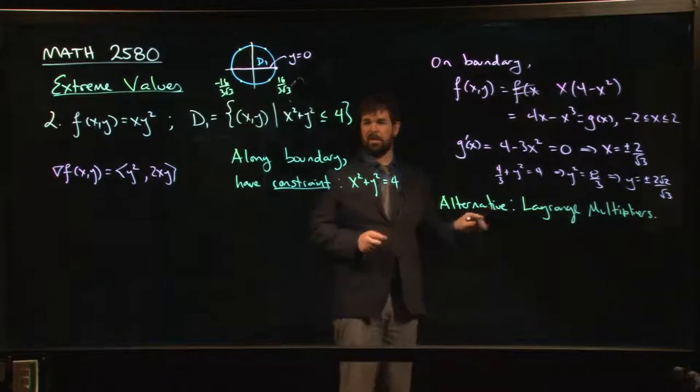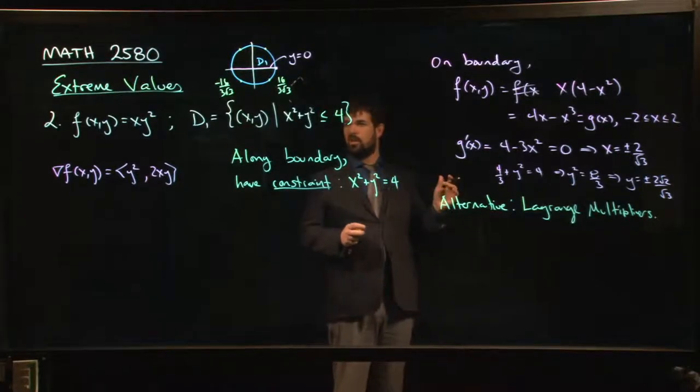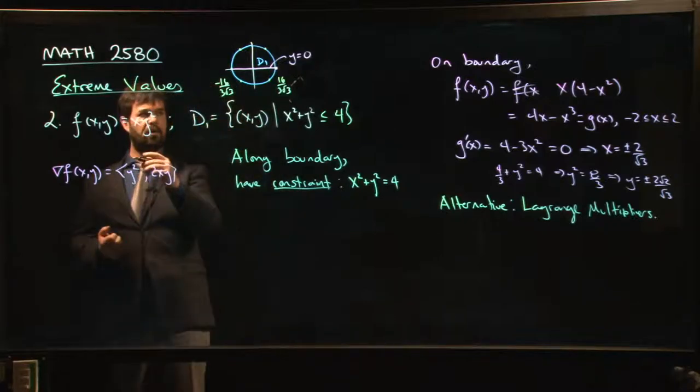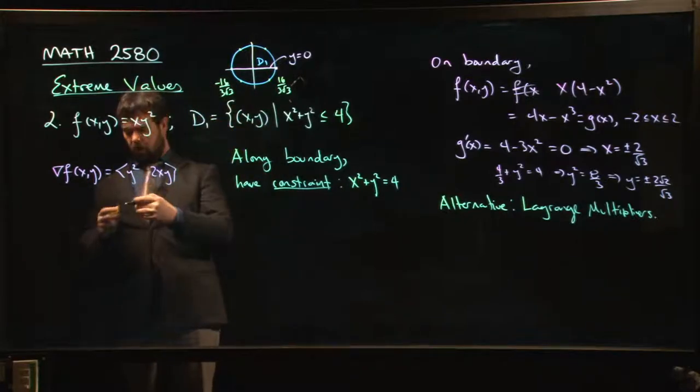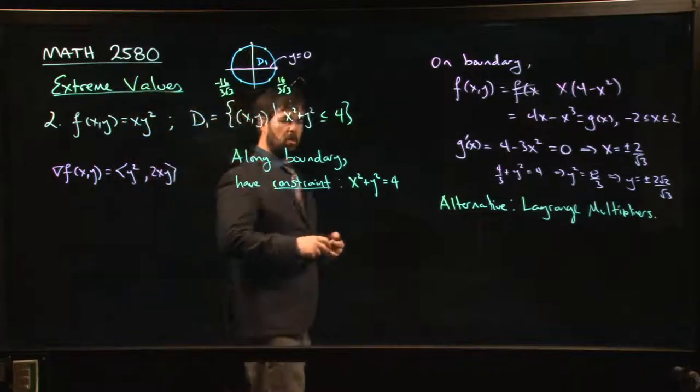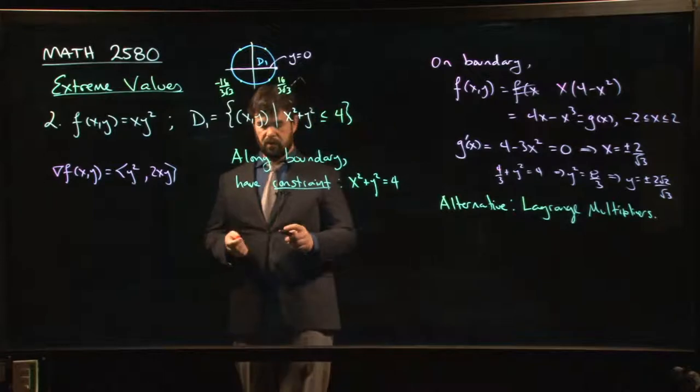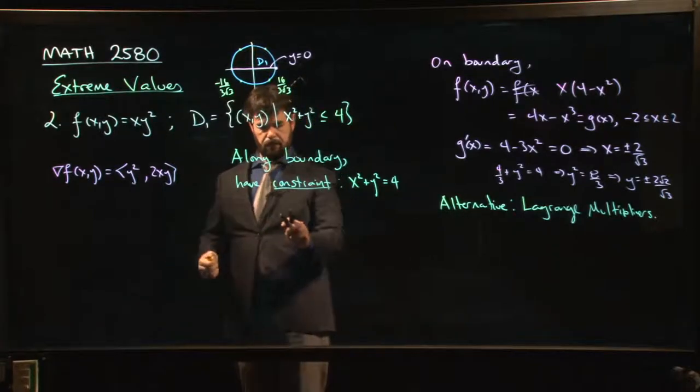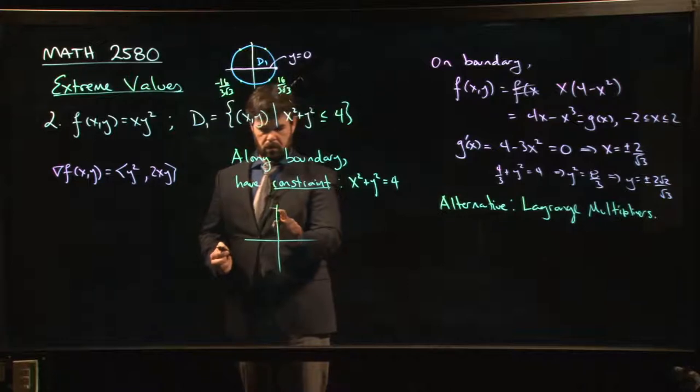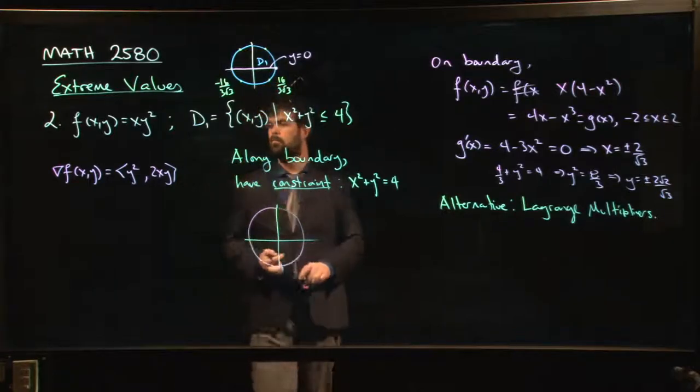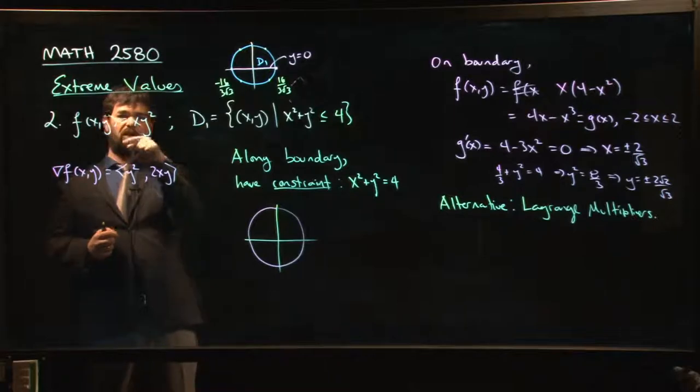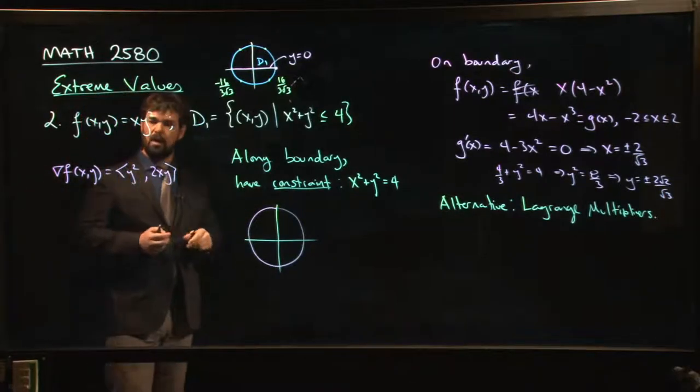Now, the method of Lagrange multipliers, it's fairly straightforward. What happens is you have this constraint and you want to look for the biggest and the smallest values that you're going to get for your function. You're looking for these max and min values. One way to think about what's going on with Lagrange multipliers is that you've got your constraint curve. So we've got our axes, we've got our circle.